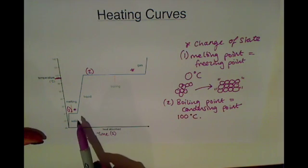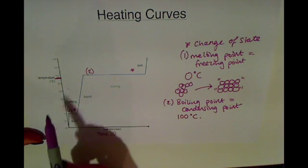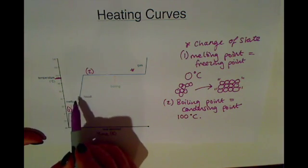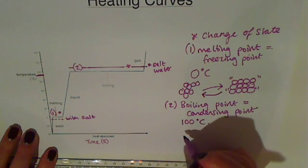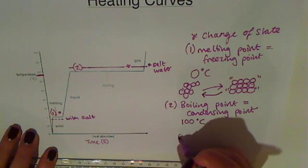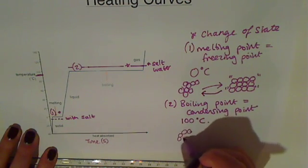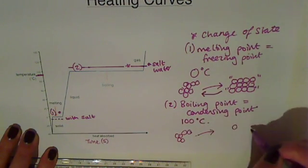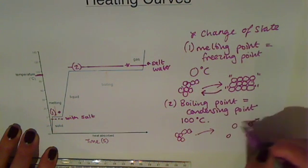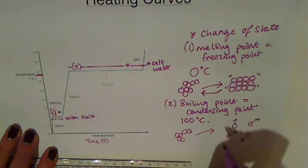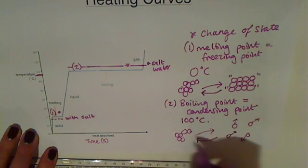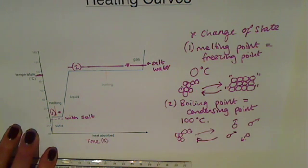Other substances would have different melting and boiling points so they would have their change of state points at different points on the graph depending on what temperature they melt or boil at. For the boiling point you would have a liquid turning into a gas whereby the gas particles would move around randomly in all directions. And in the opposite way around if you turn from a gas into a liquid you condense. So the condensing point would be the same place as the boiling point.